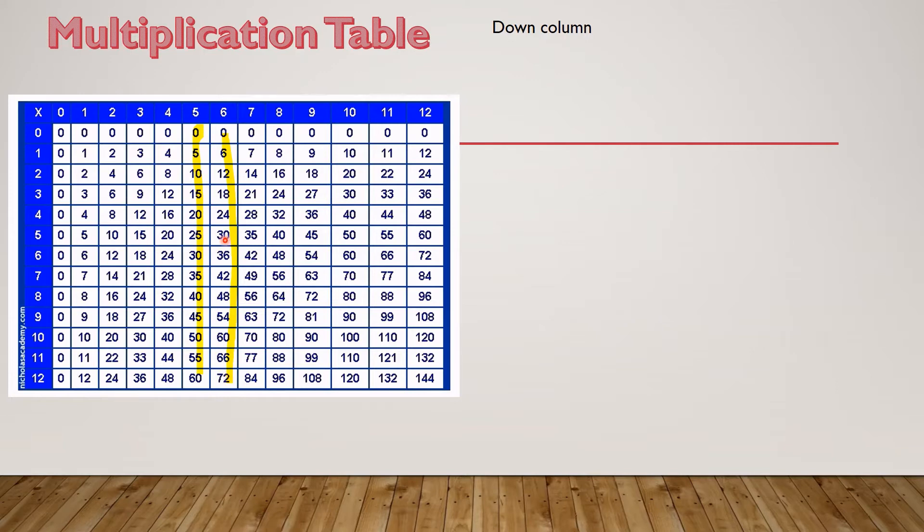Let's look at column 5. 0, 5, 10, 15, 20, 25, 30, 35, 40, 45, 50, 55, 60. And 0 to 5, we increase by 5. 5 to 10, increase by 5. As we go down this column of 5, we increase by 5.